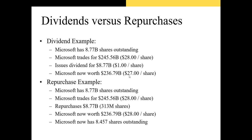The big differences come in when we look at share price and number of shares outstanding. With the dividend, the share price fell by $1. But with a share repurchase, the share price hasn't fallen at all — it's the number of shares that has fallen. Microsoft now has about 8.457 billion shares outstanding — the original 8.77 billion minus the 313 million shares repurchased and cancelled. That's the big difference: one decreases the share price and the other decreases the number of shares outstanding.